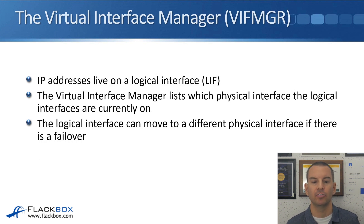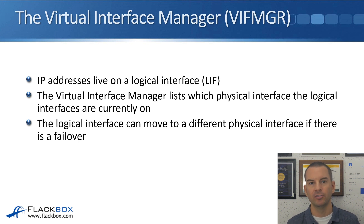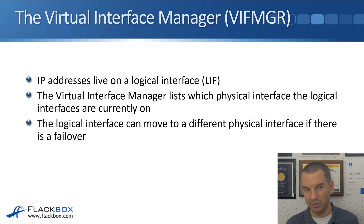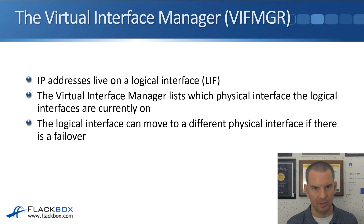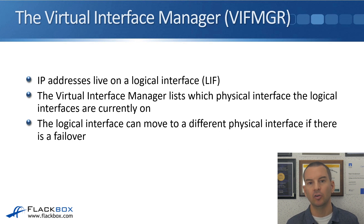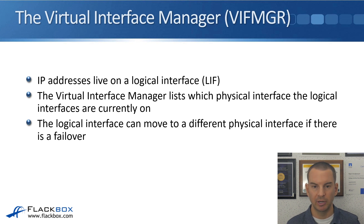The next unit is the virtual interface manager. IP addresses on the system live on a logical interface, a LIF. Those logical interfaces are not tied to a physical port on the system, so they can move — that's why we use a logical interface rather than putting the IP address directly onto the physical interface. The virtual interface manager lists which physical interface the logical interfaces are currently on. A reason that a logical interface would move from one physical port to a different one would be if a node failed.